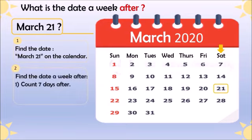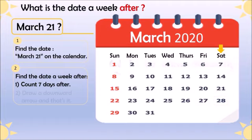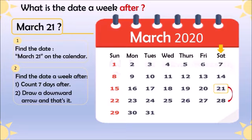Now the second step, which we can do in two ways: how to find the date the week after. The first way is to count 7 days: 1, 2, 3, 4, 5, 6, and 7 — so the answer is March 28. The second way is to draw a downward arrow from the date they gave us. We draw a downward arrow, and the answer is March 28.